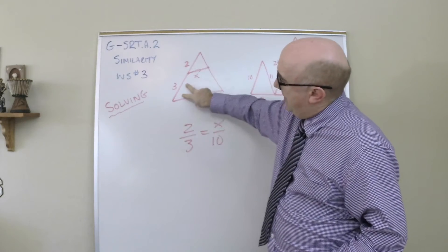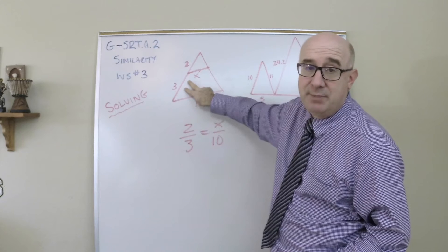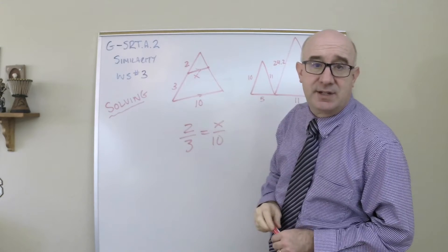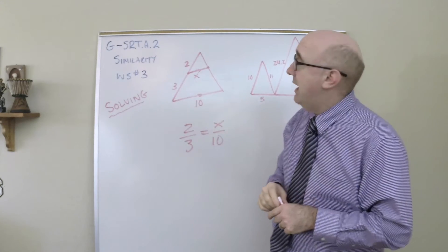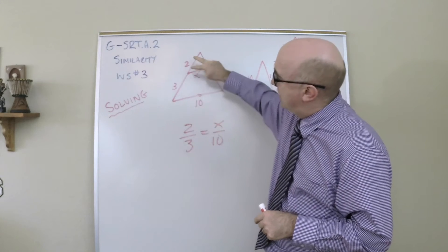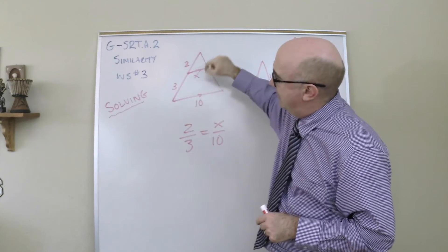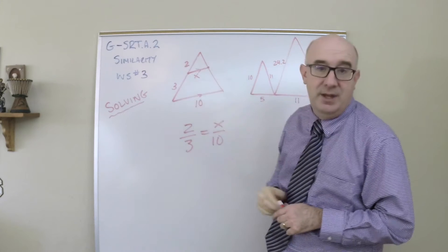The two and the three represent pieces or portions of a side, a ratio of pieces on a side. The x and the ten are not pieces of a side. They are both entire length sides. And so soon we'll learn that we could compare these pieces to these pieces. But I'm telling you right now that two to three is not the ratio of x to ten.